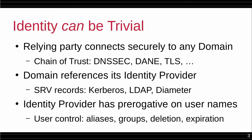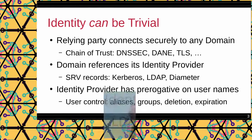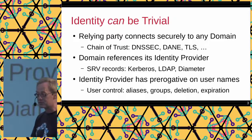This should be trivial, and it can be, because every relying party can connect securely to any other domain. Using DNS, DNSSEC, and TLS, we have the infrastructure to know what domain we're talking to. And there are standard SRV records for quite a few identity providers: Kerberos, LDAP, Diameter. Diameter is like RADIUS but designed for this cross-realm sort of thing, so it's the easier choice.